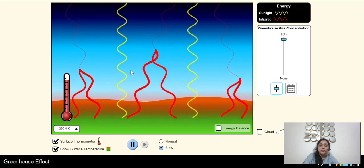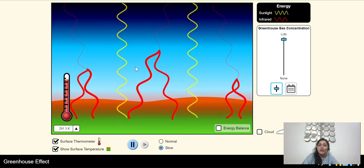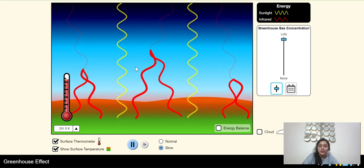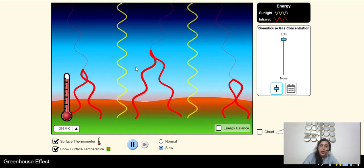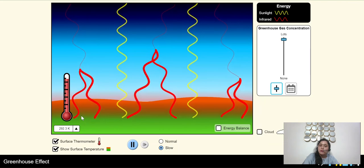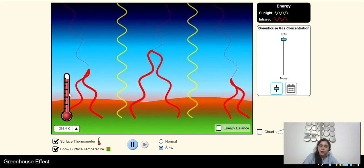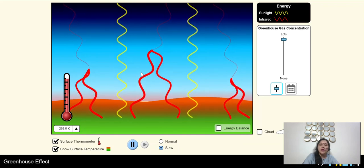What does this simulation explain? This simulation explains that as the concentration of greenhouse gases increases in the atmosphere, the temperature of the surface of the earth starts increasing. And this causes global warming.